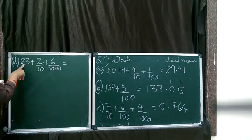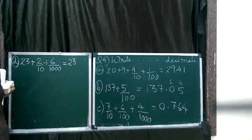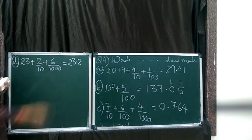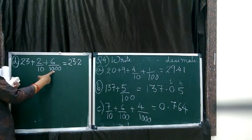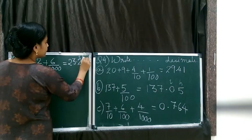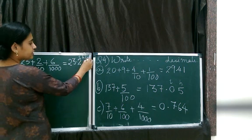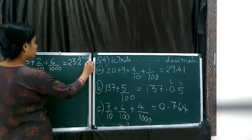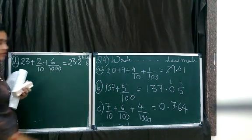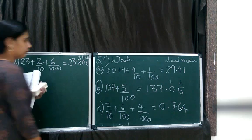23, it's a whole number. Then 2 tenths, that means 2 in tenths place. And 6 thousandths, that means 6 in thousandths place. After the decimal we have tenths, we have hundredths, and we have thousandths. So 6 is in thousandths. What about the hundredths? Hundredths means nothing, and nothing means 0.